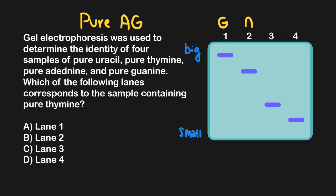Following guanine is adenine in lane two. For our pyrimidines, uracil and thymine are listed. Uracil and thymine have the exact same structure except thymine has an additional methyl group, making it a little bit heavier. So thymine is heavier than uracil, making that lane three, and lane four will be uracil. Since we've labeled thymine as lane three — the third heaviest — the correct answer is C, lane three.